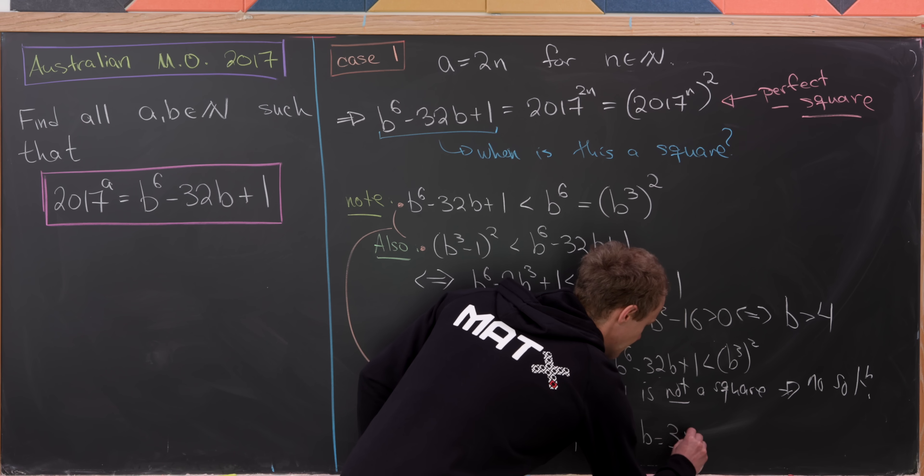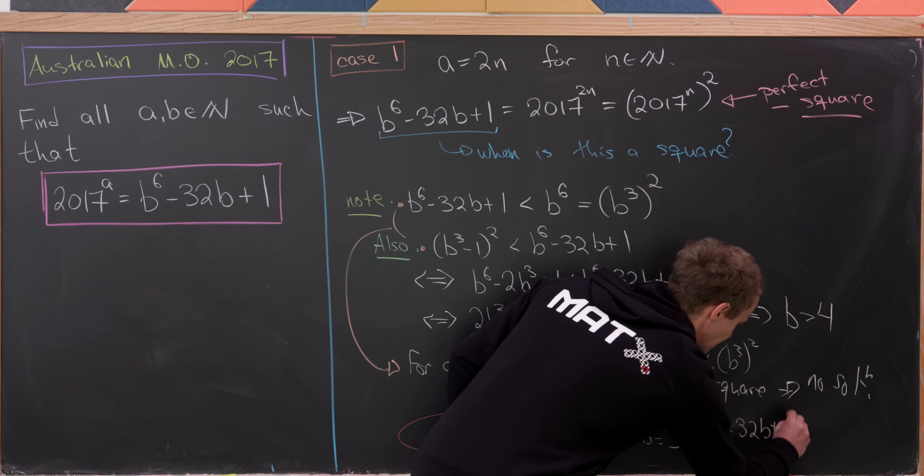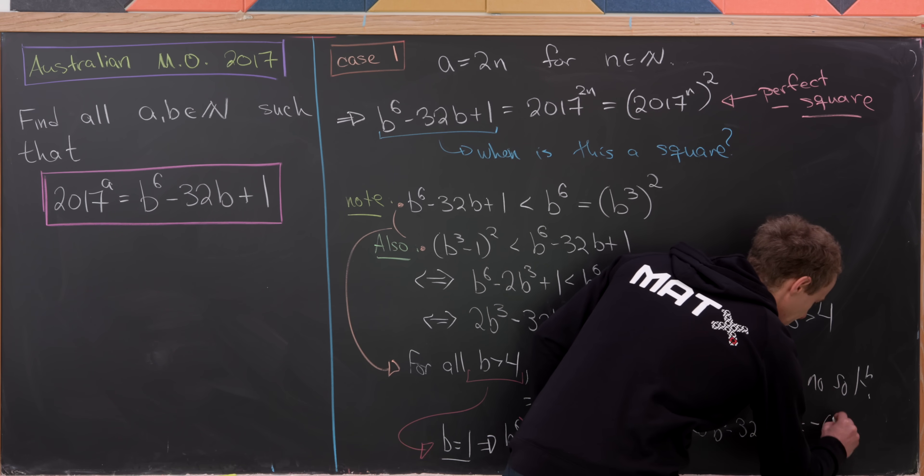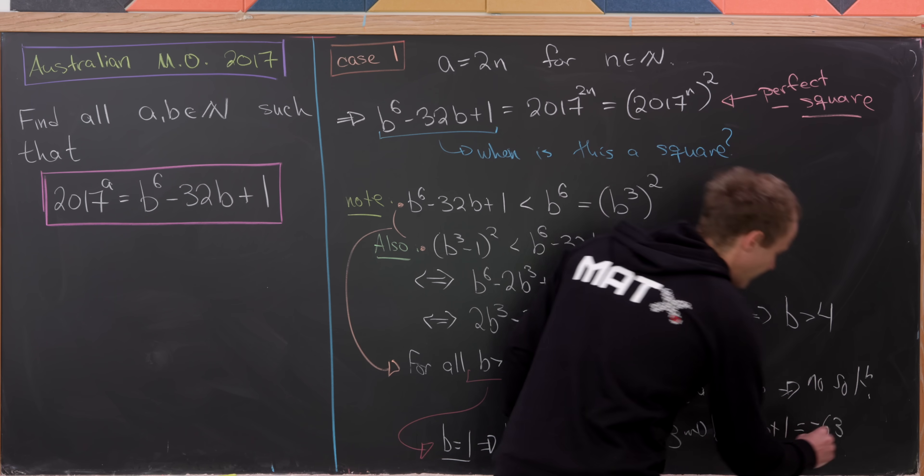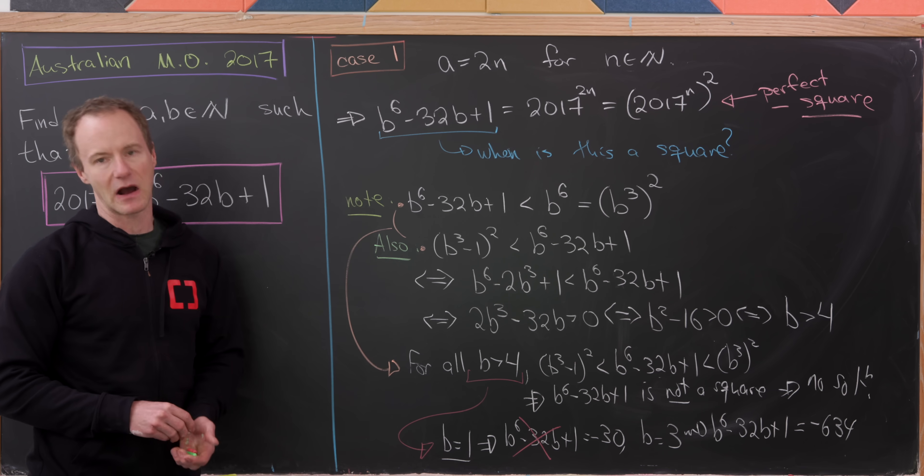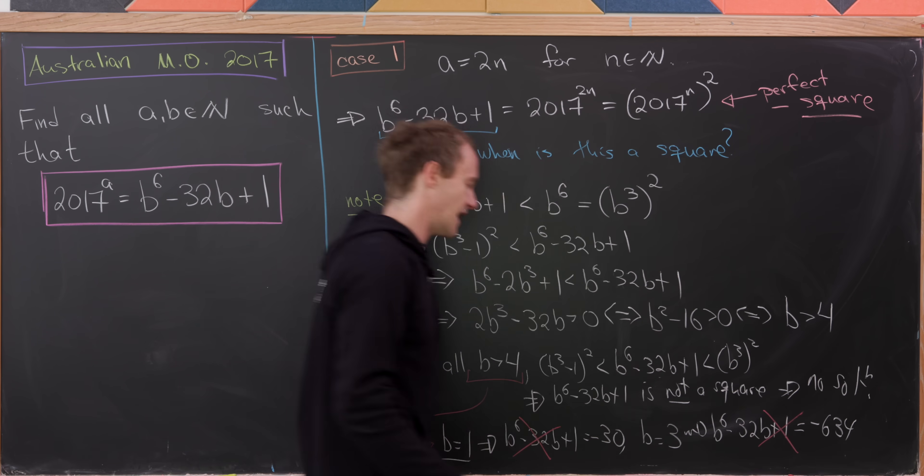And then if B is equal to 3, we get B^6 minus 32B plus 1 is, in fact, equal to negative 634. But again, that's also not a power of 2017. So there's no solution here either.